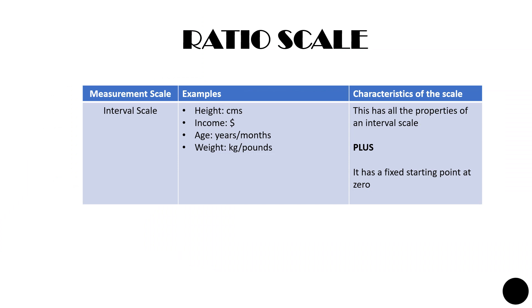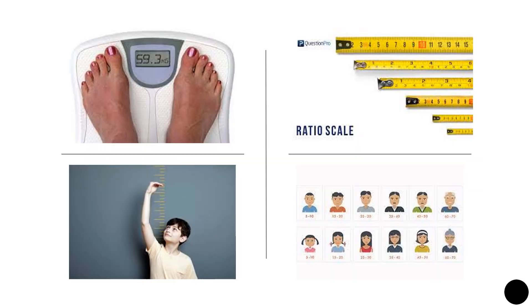Finally, a ratio scale has all the properties of nominal, ordinal, and interval scales, and also has a starting point fixed at zero — making it an absolute scale. The difference between intervals is always measured from a zero point, meaning the ratio scale can be used for mathematical operations. Examples include income, age, height, and weight. A person who is 40 years old is twice as old as a 20-year-old, and a person earning 60,000 per year earns three times the salary of someone earning 20,000 — such comparisons are possible with the ratio scale.